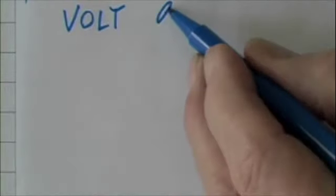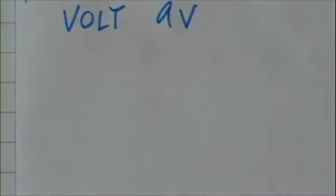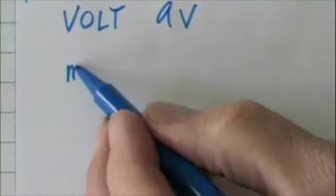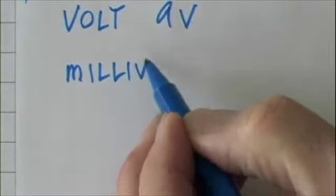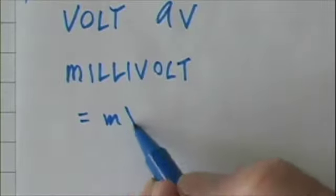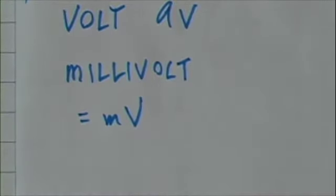So if you have a 9 volt battery, that means 9 volts separate the positive and negative pole of the battery. The trouble is, cells are so tiny and a volt is so large, we have to use a millivolt when we're dealing with cells. And millivolt is designated this way: mV.